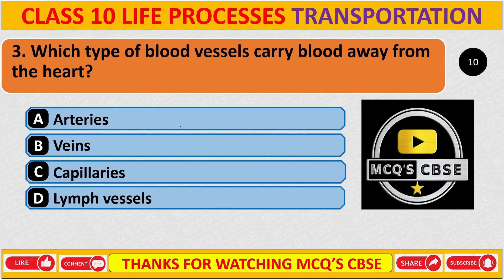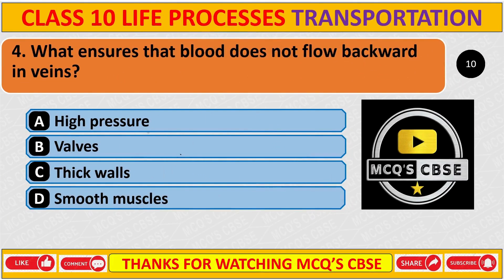Which type of blood vessel carries blood away from the heart? The correct answer is A: arteries. What ensures that blood does not flow backward in veins? The correct answer is B: valves.